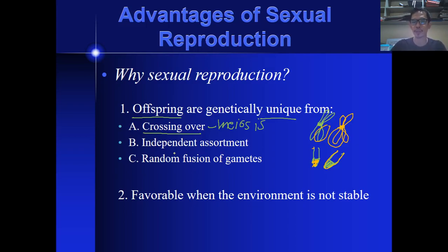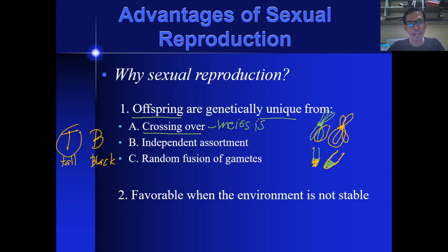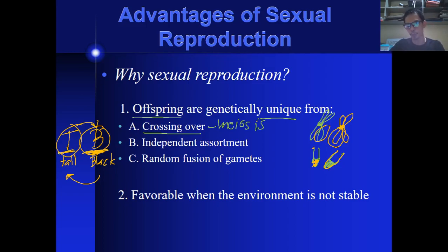Next is independent assortment. If you recall Mendel's three laws of heredity: one is the law of dominance, one is the law of segregation, and another is the law of independent assortment. It tells us that genes are completely independent from each other. For example, if this gene is coded to become tall and this one is for skin color, the height will not affect the color of the skin, and vice versa. These two traits are completely independent of each other.